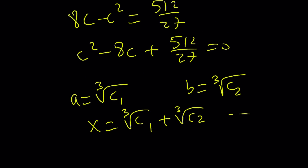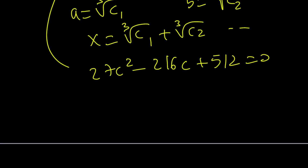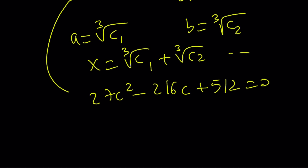If you multiply both sides by 27, you get 27c² - 216c + 512 = 0. This is going to be a bit involved with the discriminant, but a lot of things can be simplified. 216 and 27 are both divisible by 9, so hopefully you can use that to simplify. You should be able to take out at least one 9. Then just plug it into the formula — that gives you c. Don't forget you have to cube root it, find two values for c, cube root both, and add them up to get x. That gives you one x value. You can find the others by polynomial division.